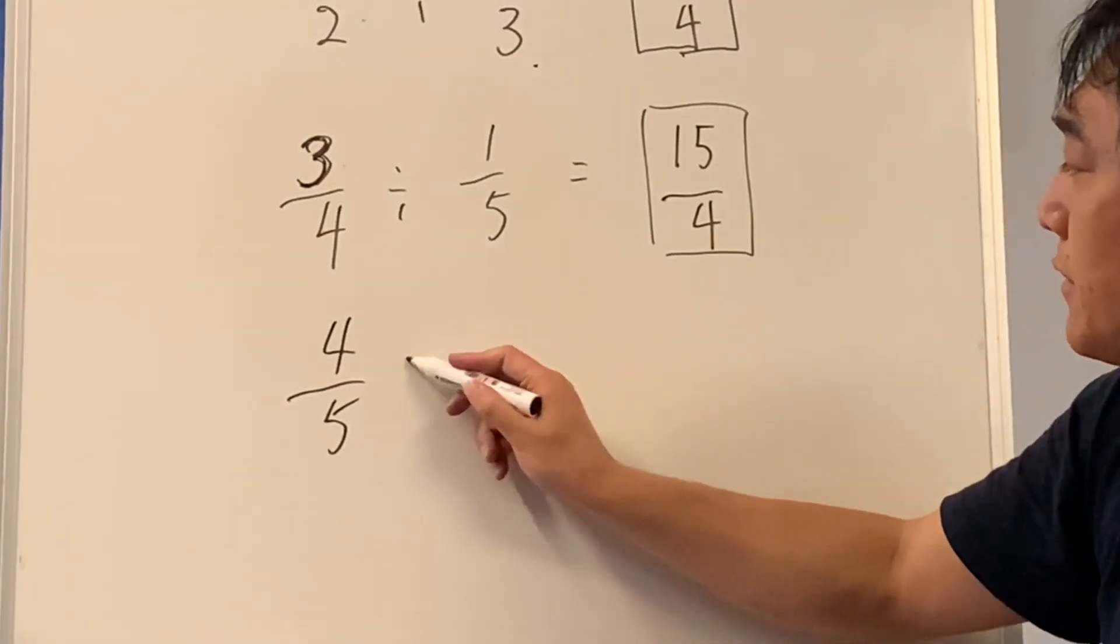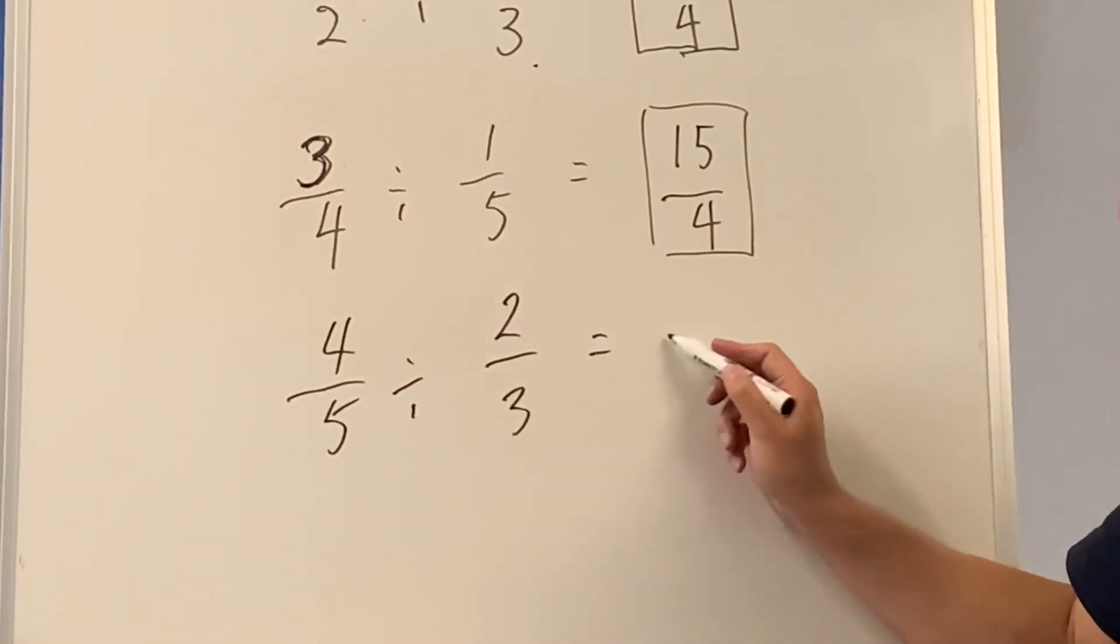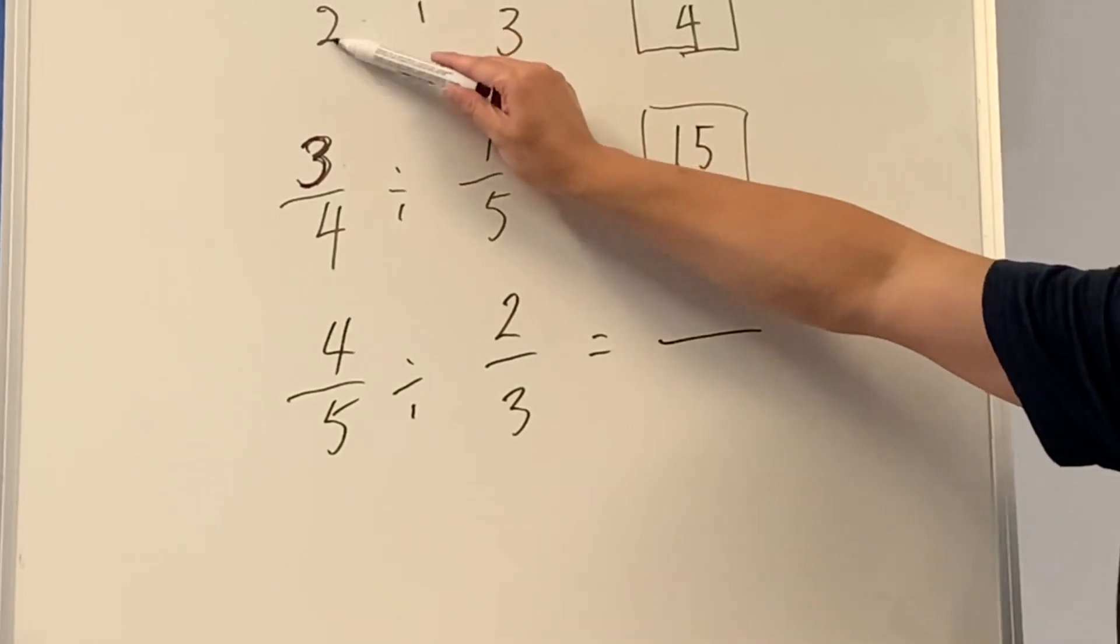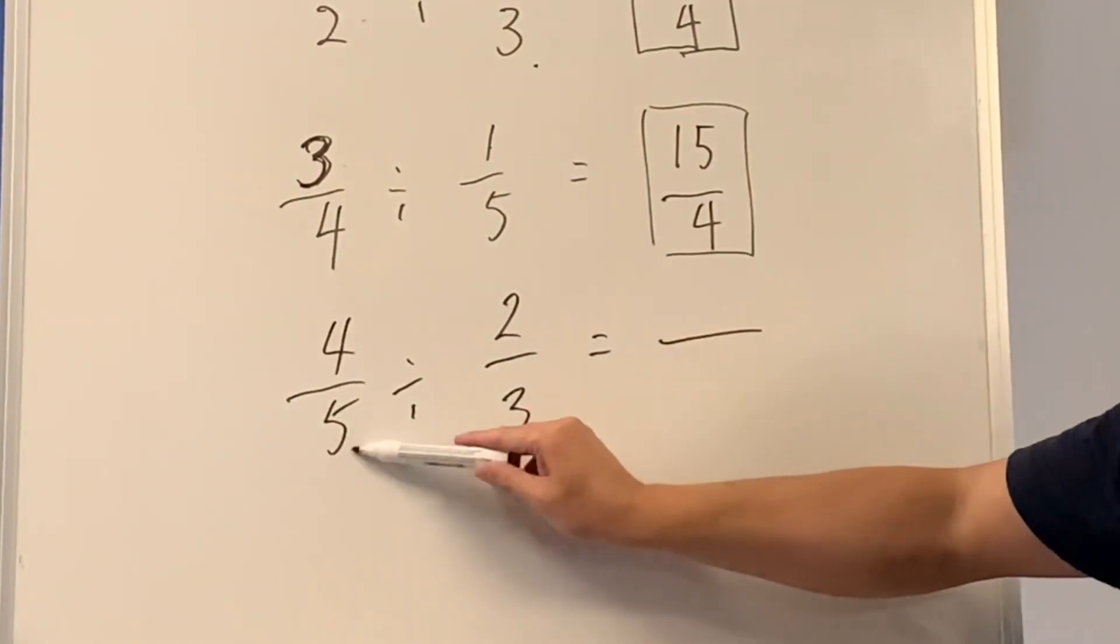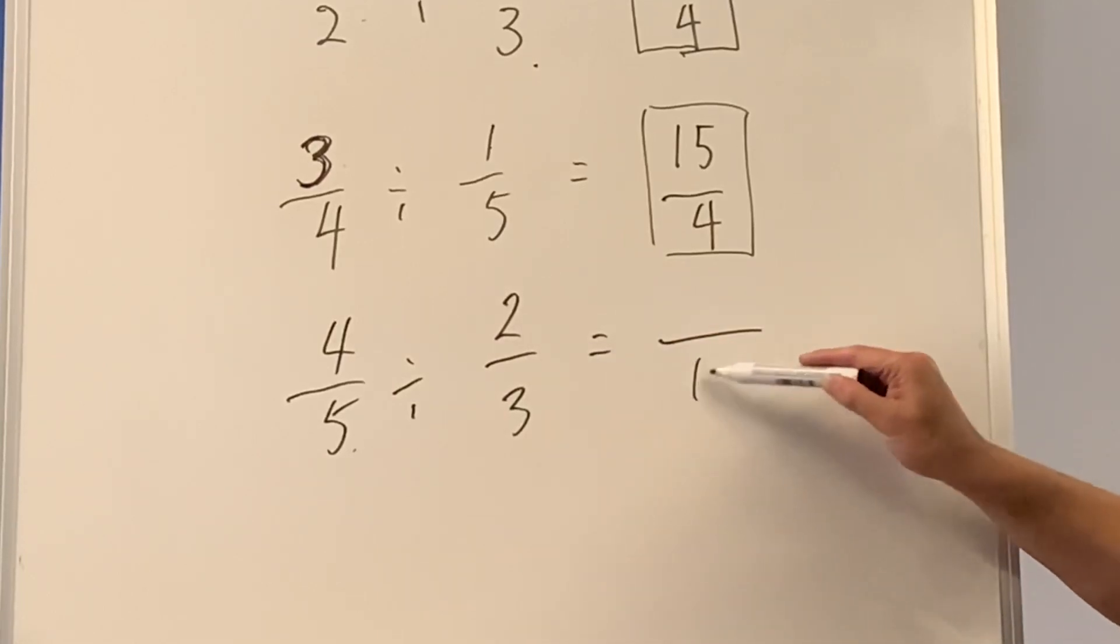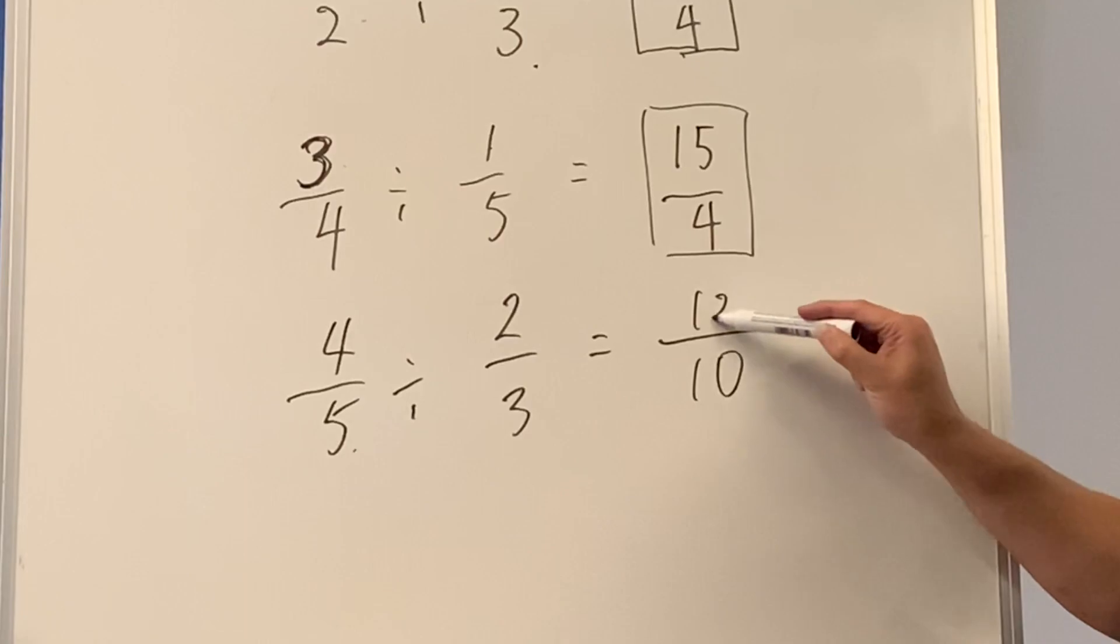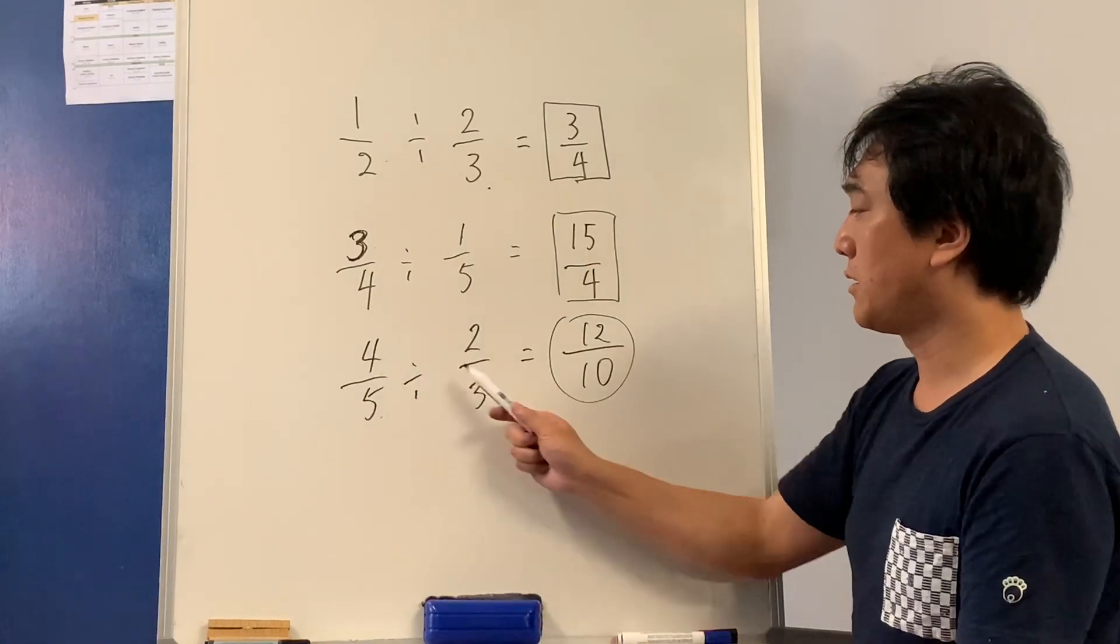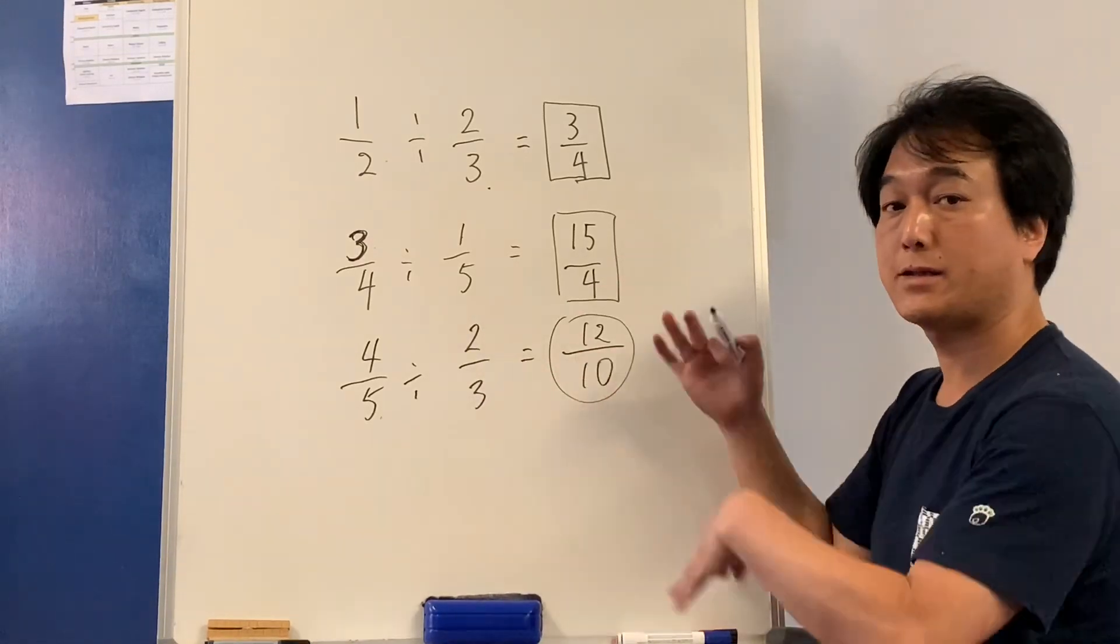So four-fifths divided by two-thirds. Students may be able to find the pattern there. Five times two is ten. Four times three is twelve. We are multiplying the numbers in a sort of zigzag way.